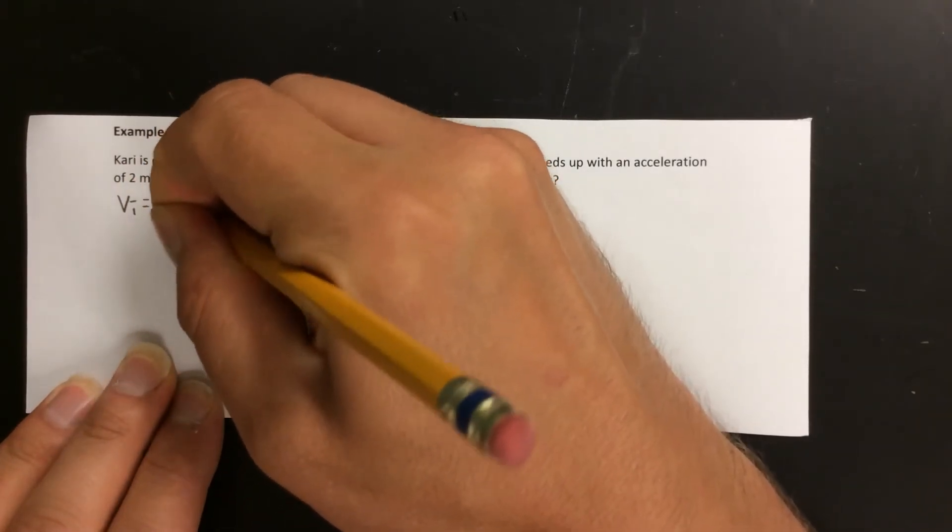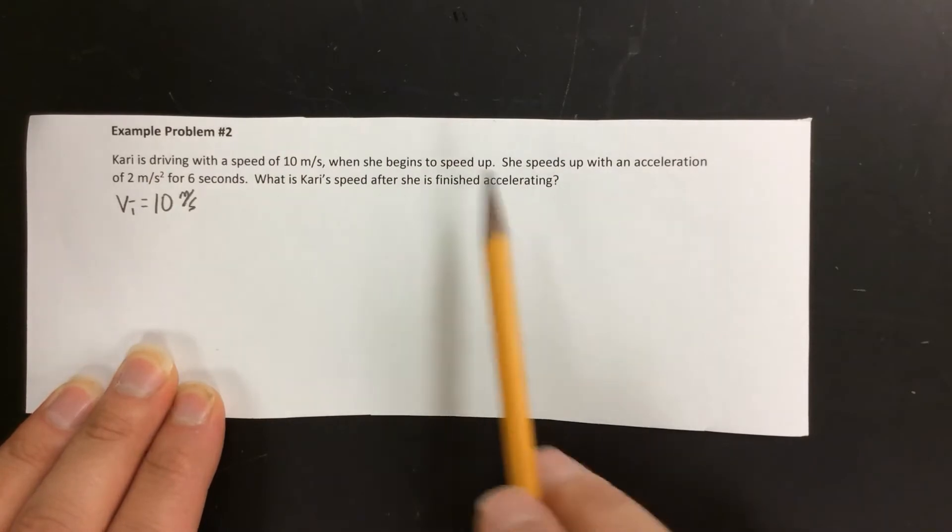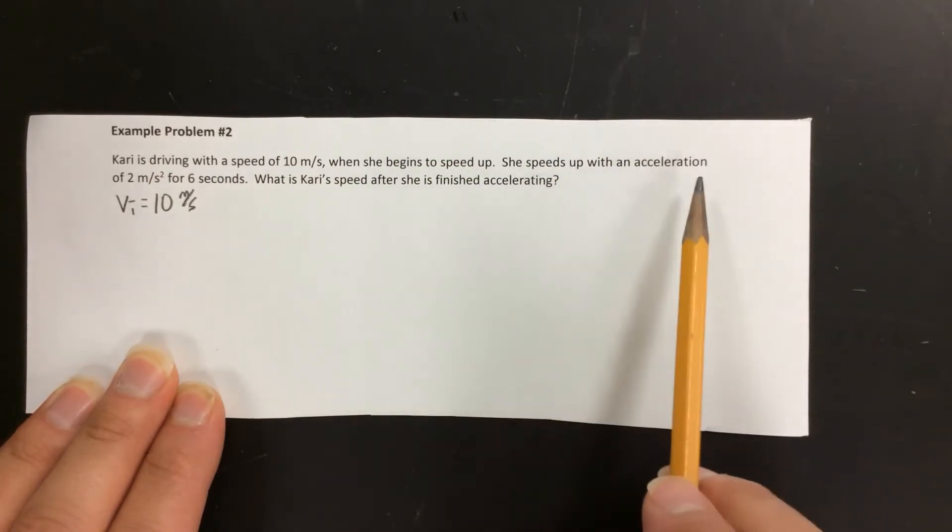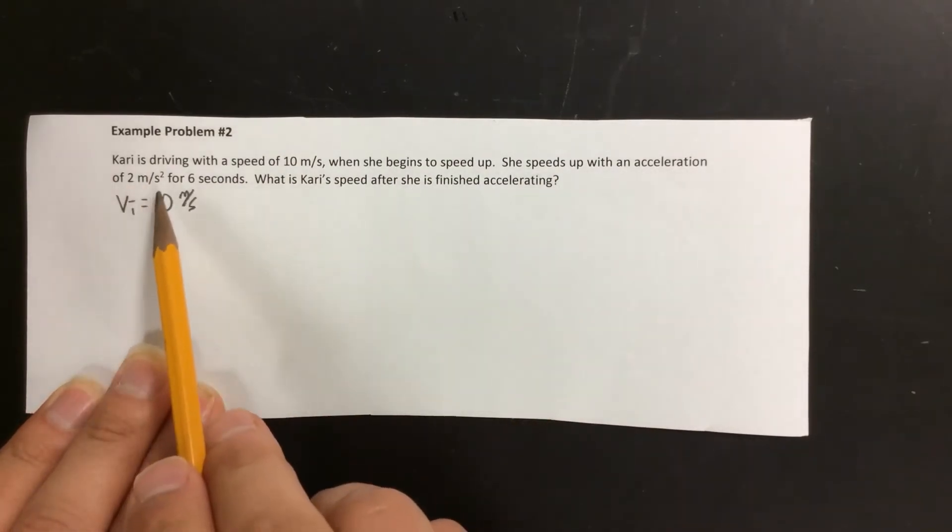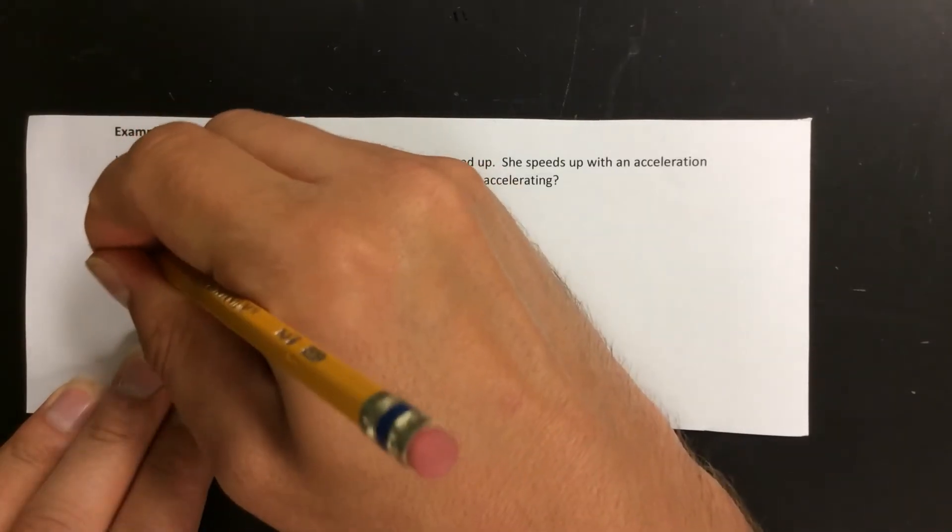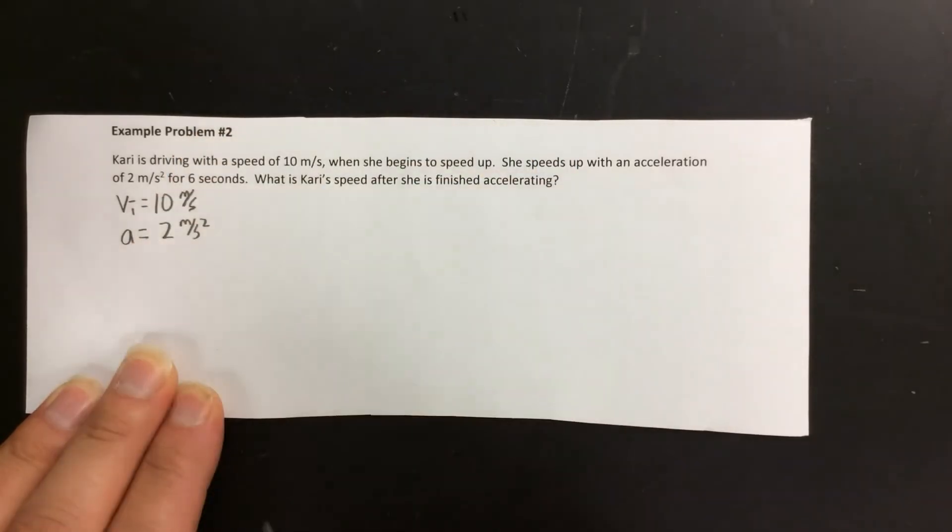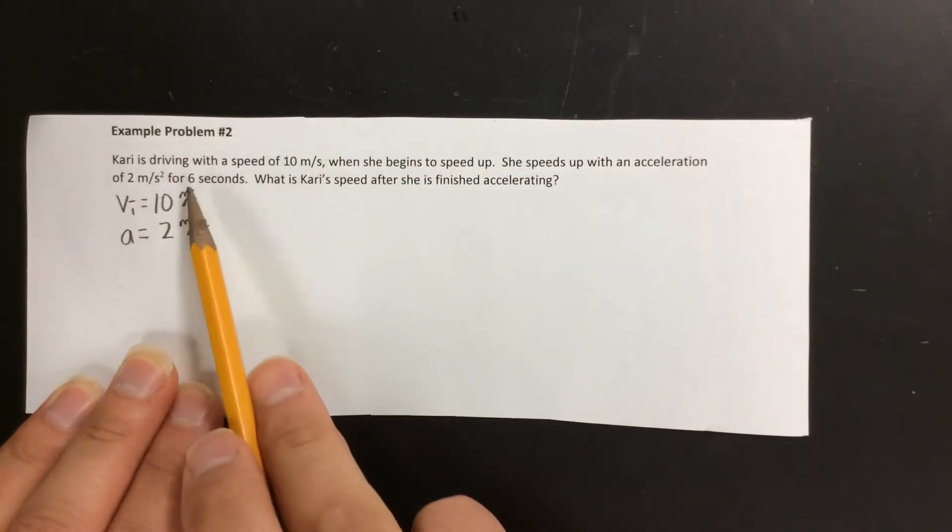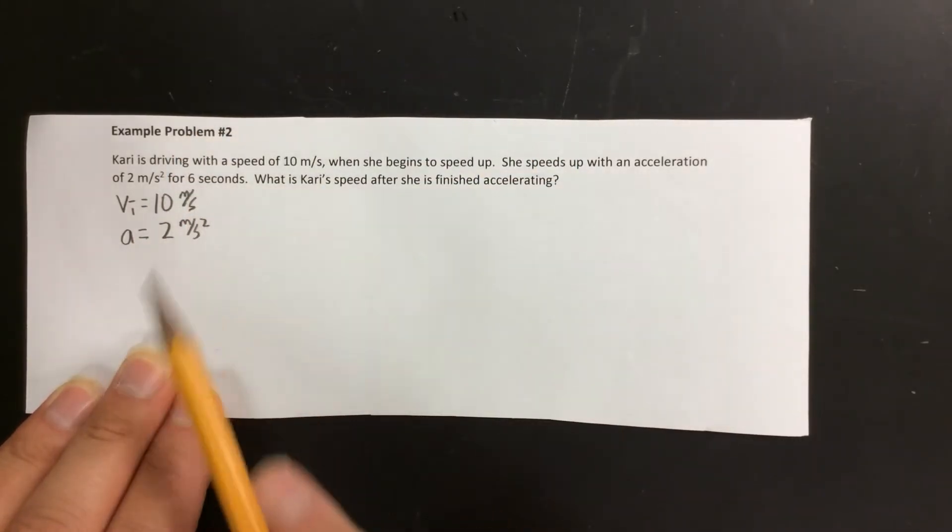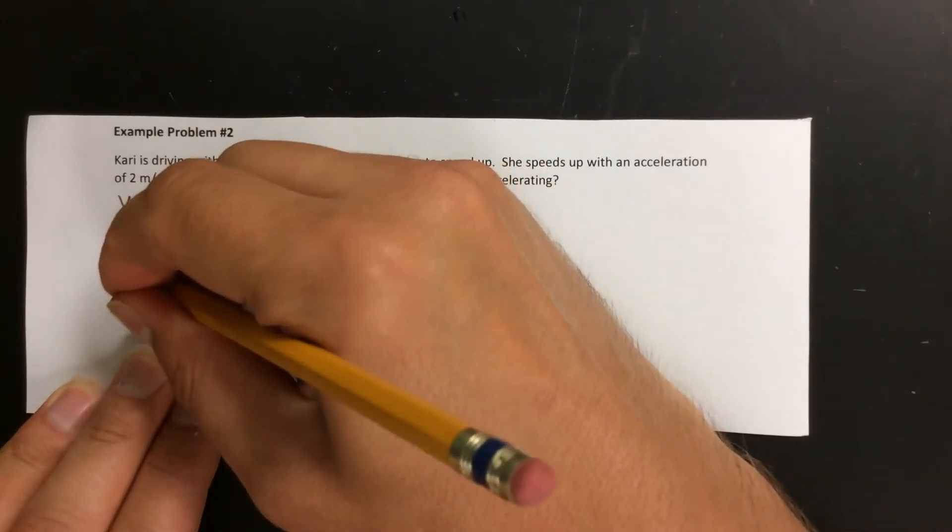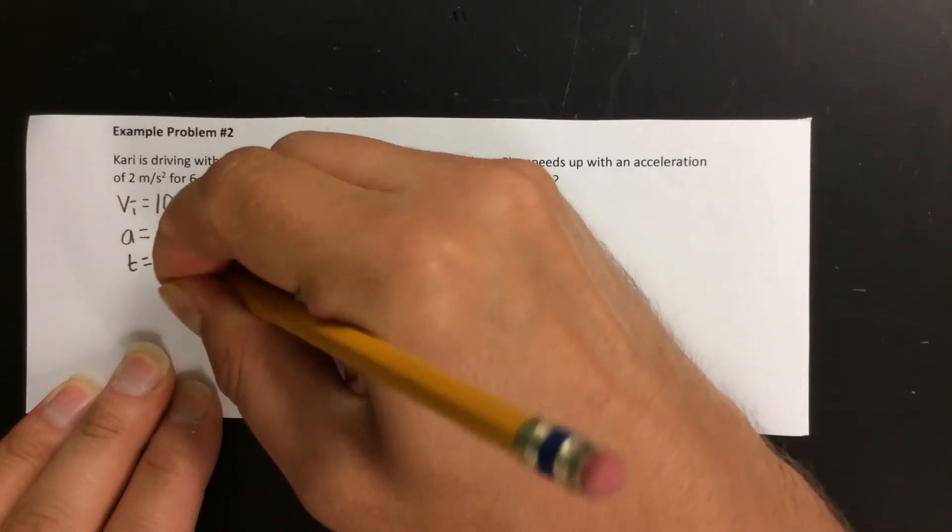So that would be our initial velocity. So VI equals 10 meters per second. She speeds up with an acceleration of 2 meters per second squared. So that's our acceleration, a equals 2 meters per second squared. And it says for 6 seconds, well that's a time. So t equals 6 seconds.